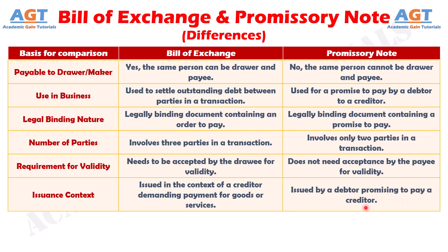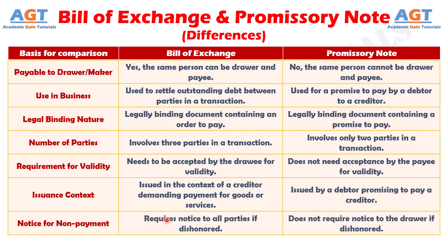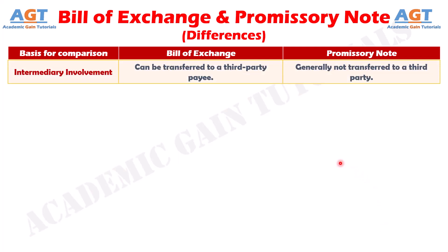Number fifteen: A Bill of Exchange requires notice to all parties if dishonored, whereas a Promissory Note does not require notice to the drawer if dishonored. Number sixteen: A Bill of Exchange can be transferred to a third-party payee, whereas a Promissory Note is generally not transferred to a third party.